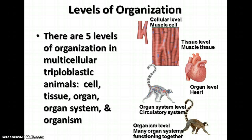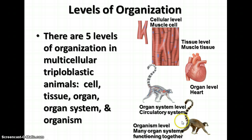First of all we're going to talk about levels of organization. There are five levels: the cell level, like a muscle cell; the tissue level, which is a bunch of muscle cells together making muscle tissue; the organ level, made of several different kinds of tissue; the organ system, which is several organs put together; and then the organism, made of many systems that function together. Those are the basic levels of organization in multicellular triploblastic animals.